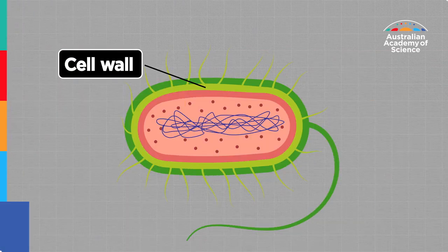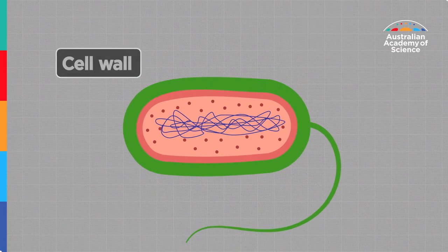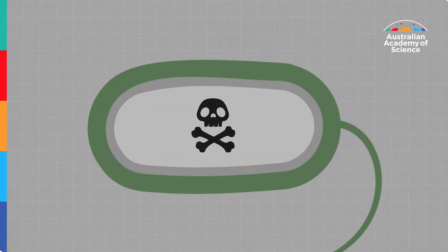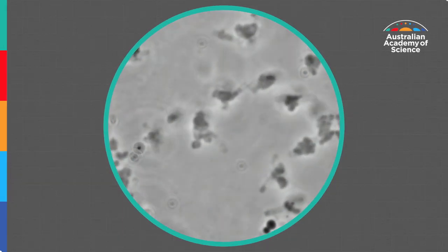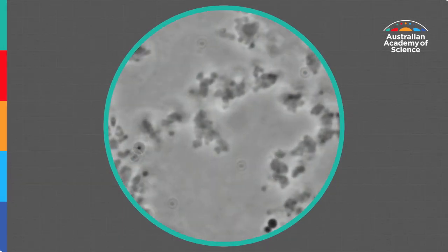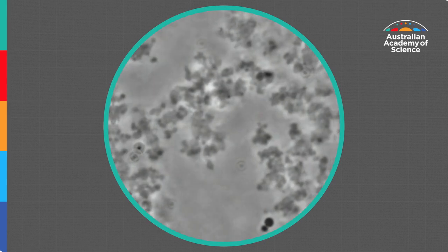So most bacteria have this thick cell wall on the outside, so that when penicillin acts on that and stops them from making the cell wall, the cells are killed. But it turns out that for most bacteria, if you get the conditions right, you can actually grow them without a cell wall. And they call these things L-forms.